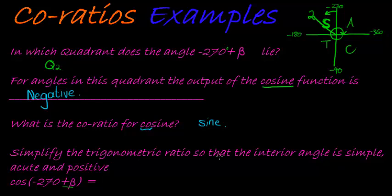Finally, we have to simplify the ratio so that the interior angle is simple, acute, and positive. We should actually say there, and made with the x-axis, made with the x-axis.